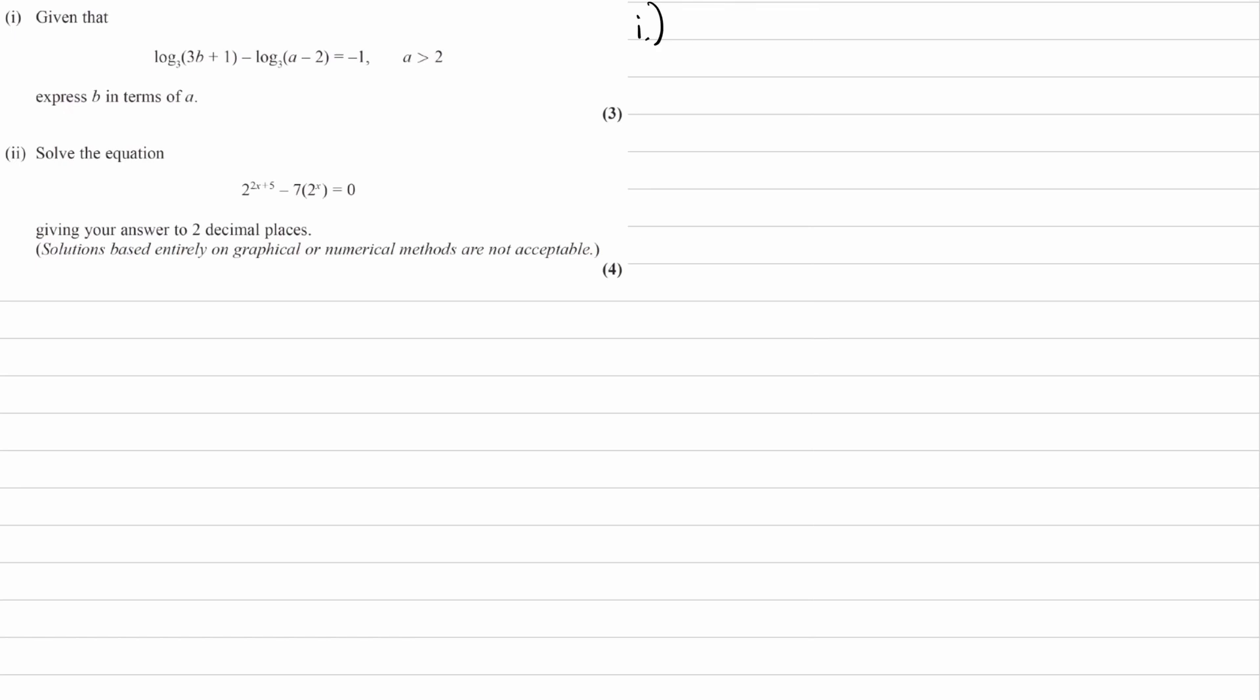So for part 1, you want to think about how you can deal with this minus sign, what rule you can use to get rid of that, and then you want to think about how can you get rid of the logarithms. So what would you have to do to both sides of the equation to get rid of the logarithms?